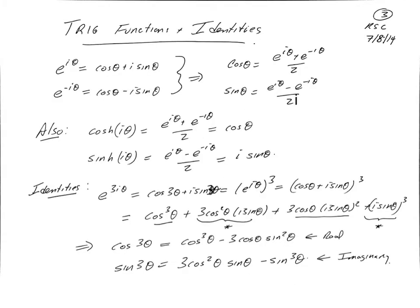We can use Euler's formula to relate exponentials to trigonometric functions. Starting with Euler's formula itself, e to the i theta is cosine theta plus i sine theta. If we look at e to the minus i theta, that's just e to the i times minus theta. We get cosine of minus theta, which is cosine theta, and sine of minus theta, which is minus sine theta. Therefore, e to the minus i theta is cosine theta minus i sine theta. Putting these together, cosine theta is e to the i theta plus e to the minus i theta over 2, and sine theta can be written as e to the i theta minus e to the minus i theta over 2i.